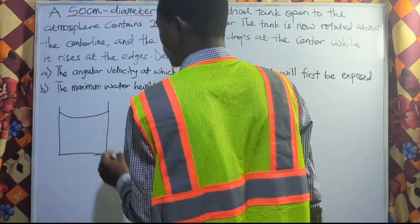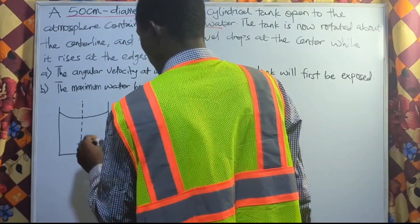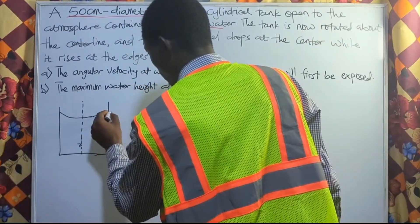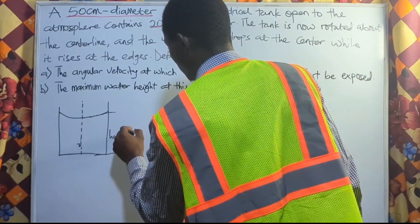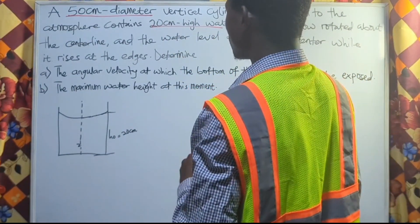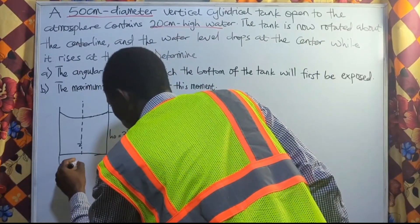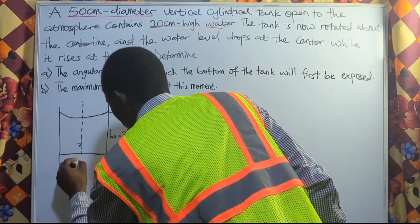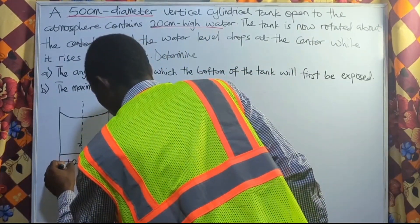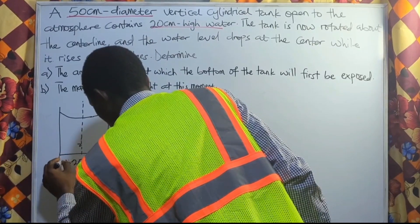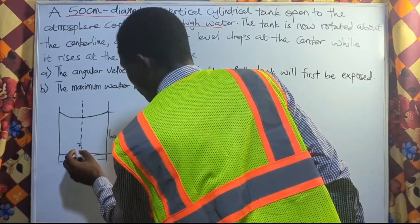This is our water level here and this is our z-axis. The original height is h-naught and h-naught is equal to 20 cm. We also have the diameter — the full width from one side to the other — so the radius R is 25 cm, or 0.25 m. We have our origin point at zero, which is our center.